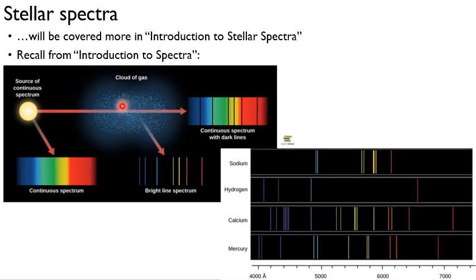You might wonder, wait a second, a star is a hot object, so why don't I have an emission spectrum from a star? And that's because, remember, the core of the star is extremely hot, and the envelope, the outer layers, is going to be much cooler.